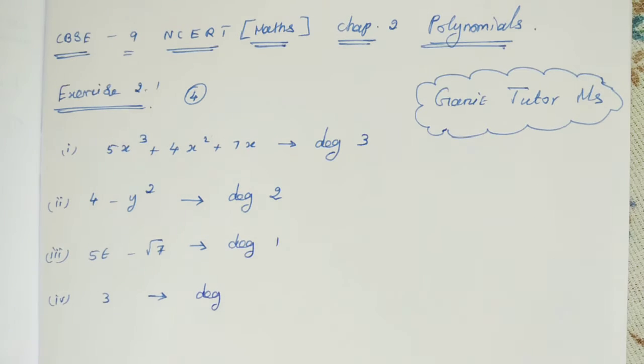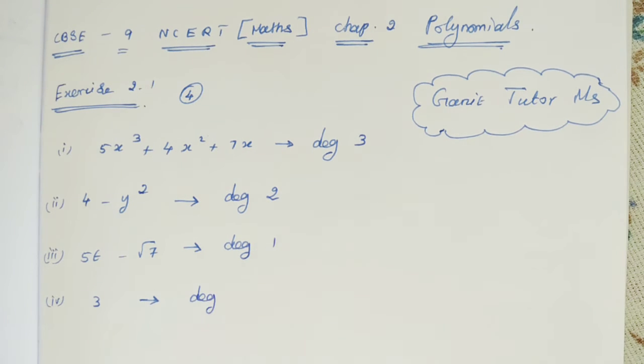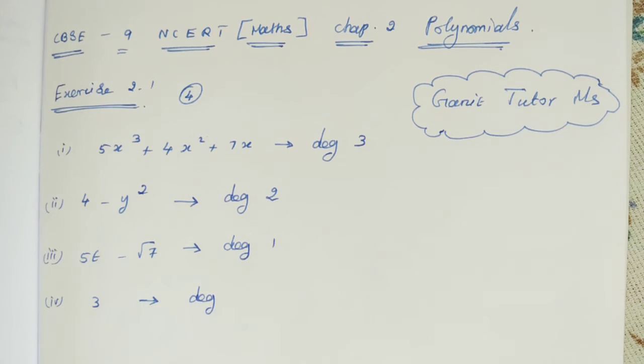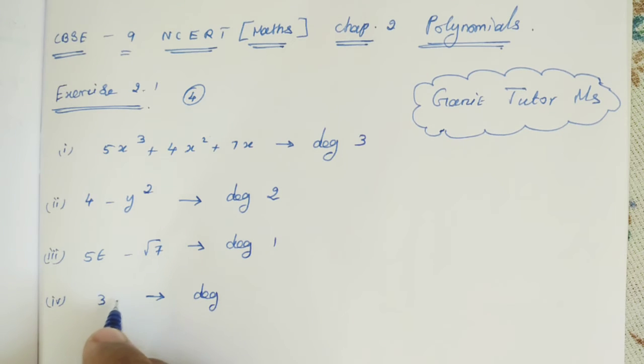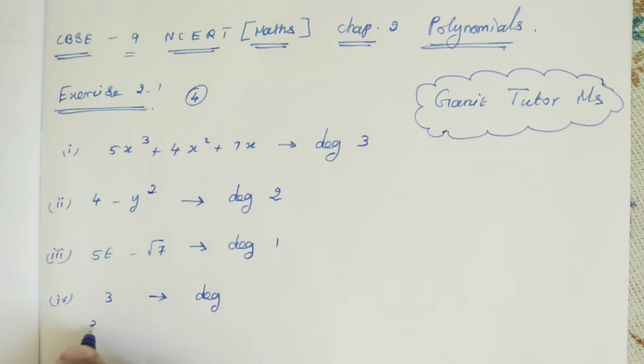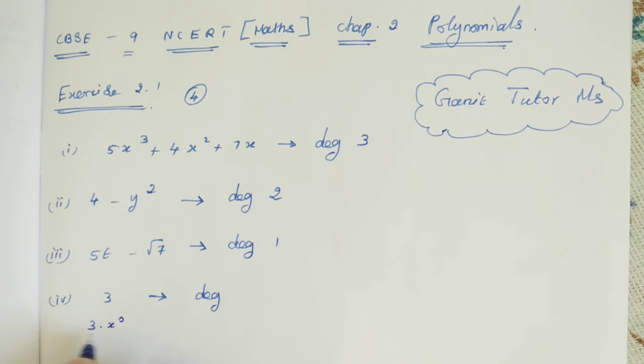Next here, degree. Here is a constant polynomial. 3 is a constant polynomial. In a constant polynomial, you can write x power 0. You can write 3 as 3 times x⁰. Anything power 0 becomes 1. So 3 times 1 is 3. So x power 0, the degree is 0.